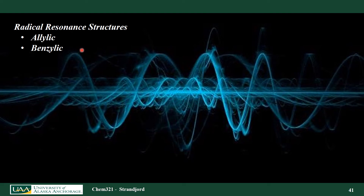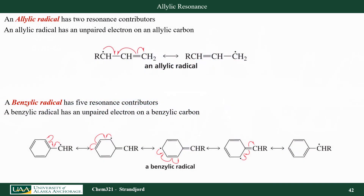Let's now look at some other radical reactions — allylic and benzylic radicals. An allylic radical is actually fairly stable because I can draw resonance structures. Moving one electron at a time, I form another radical — these are resonance structures, and whenever I draw resonance structures, I think stable. So allylic radicals are very stable. The same is true with benzylic radicals — if I form the benzylic radical and move electrons around one at a time, I can form five resonance structures, which means benzylic radicals are very stable.